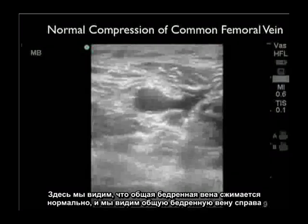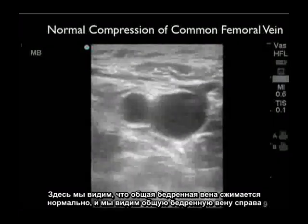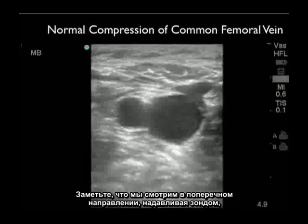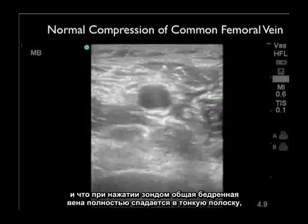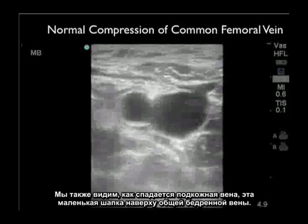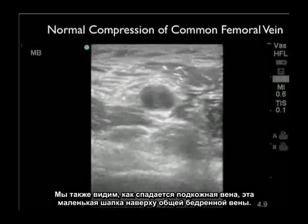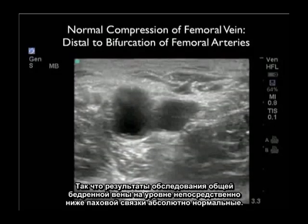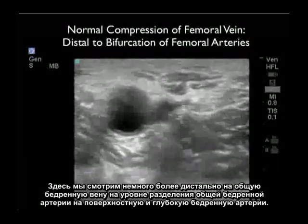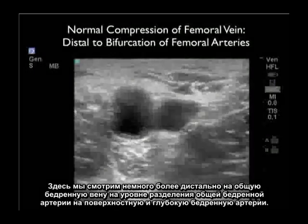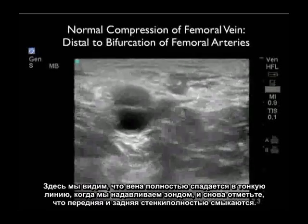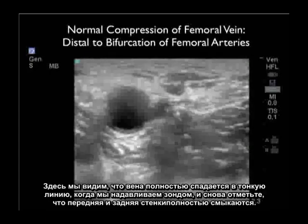Here we see normal compression of the common femoral vein to the right of the common femoral artery on the left. In the short axis or transverse orientation, pressing down with the probe, the common femoral vein completely collapses — the anterior and posterior walls of the vessel meet. We also see compression of the saphenous vein, that little cap on top of the common femoral vein — a completely normal exam just below the inguinal ligament. Looking more distally at the level of bifurcation, we again note complete compression of the vein with anterior and posterior walls completely meeting.